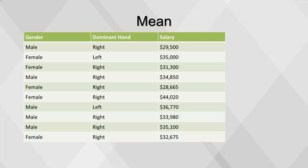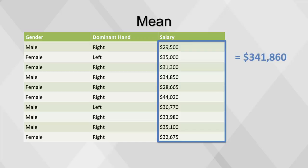To find the mean or average, add up all the numbers and divide by the number of rows. $341,860 divided by 10 equals a mean of $34,186.